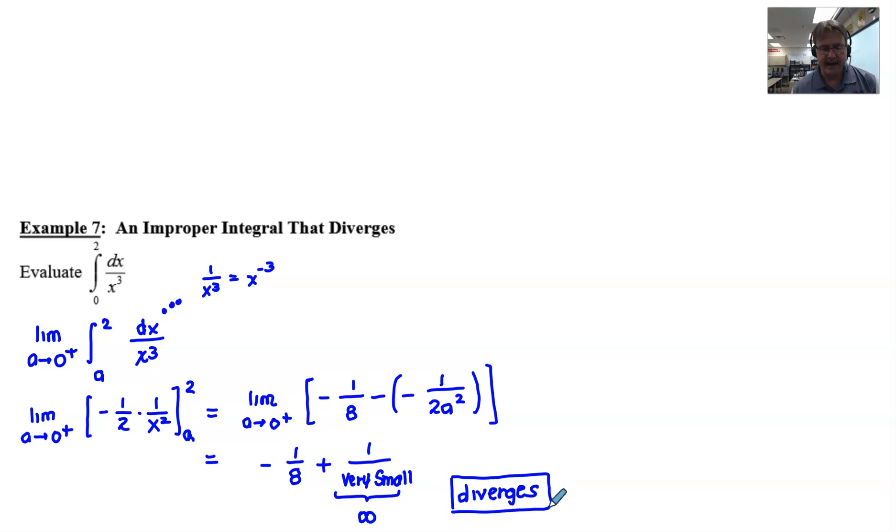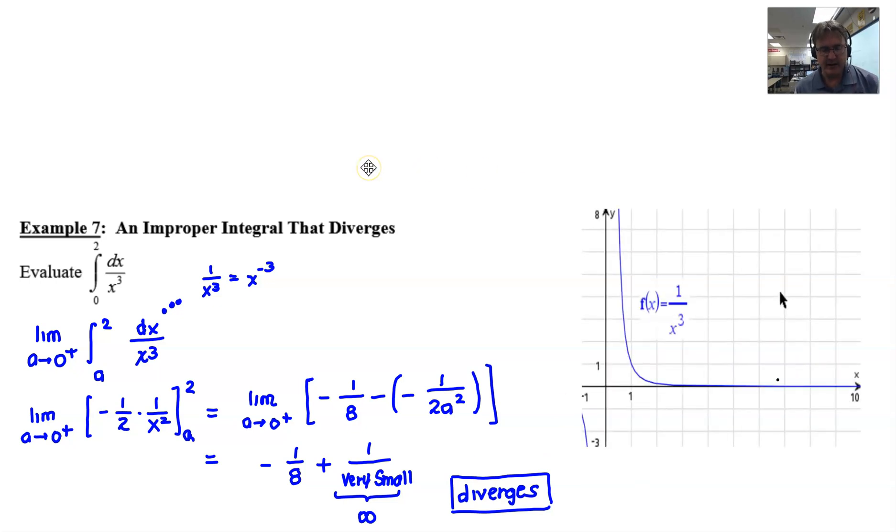Once again, I've gone ahead and sketched the graph here for you. Let's see if we can pull that up. We see our 1 over x cubed. As you can see, if I find this area from 0 to 2, I'm talking about accumulating all of this space, all the way up here to 2. Now, the issue is at the very beginning. When we start accumulating this space beginning at x equals 0, it's going to say, okay, well,